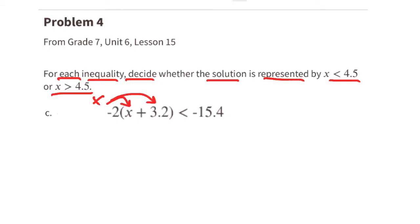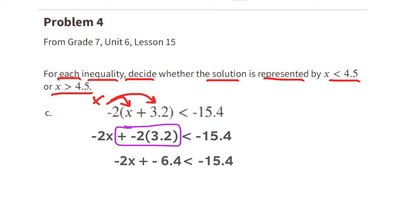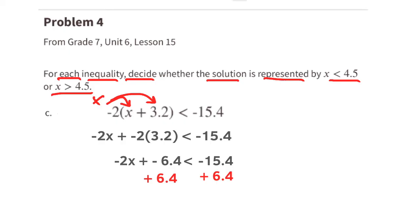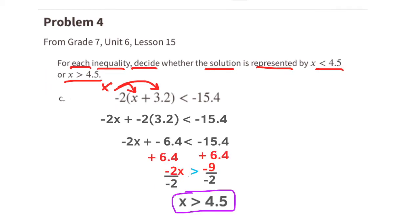Part c: just like part a, we use the distributive property — negative 2 times everything inside the parentheses. On the right side we still have negative 15.4, and on the left we have negative 2 times 3.2 plus negative 2 times x, which gives negative 6.4. We add 6.4 to both sides, leaving negative 2x on the left and negative 9 on the right. Dividing both sides by negative 2 and switching the inequality sign gives x is greater than 4.5.